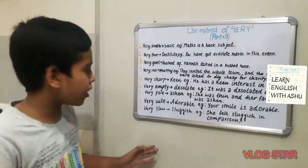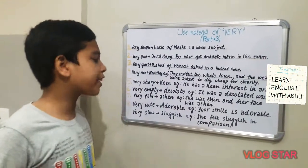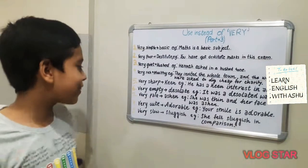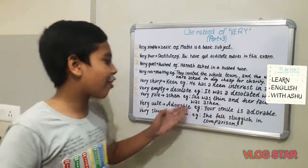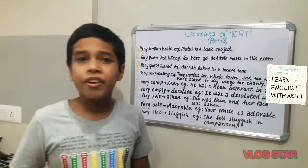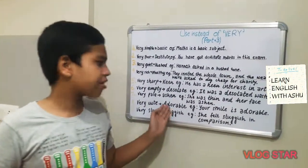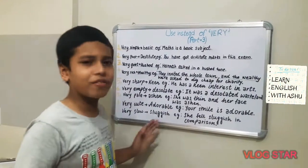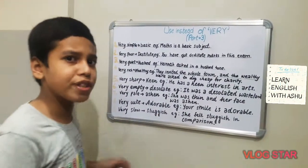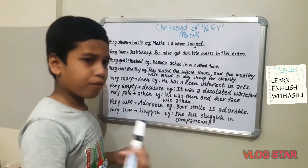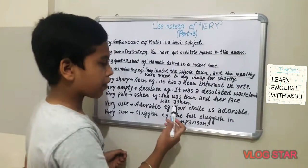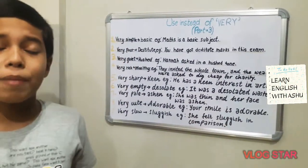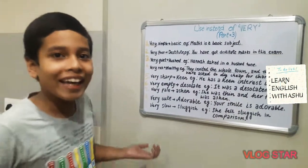Our next word is 'very cute.' Instead of very cute, we can say 'adorable.' You have heard this word, I think — this is a very common word which we use. For example, your smile is adorable — it means your smile is very cute.